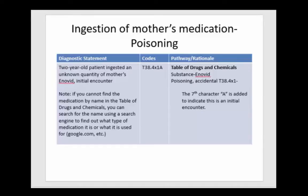Here's an example: a two-year-old patient ingested an unknown quantity of his mother's Inovid, which is birth control — initial encounter. If you cannot find the medication by name in the table of drugs and chemicals, you could search for the name or the classification of that drug using a search engine to find out what type of medication it is. Going to the table of drugs and chemicals and looking up Inovid, it is there and you're going to go to the accidental poisoning column. Seventh character A is added to indicate this is an initial encounter.